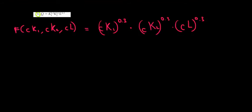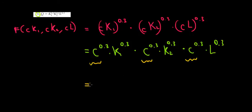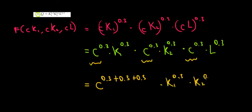Let's work out the math. This is going to be pretty mechanical. We have C to the power of 0.3 times K1 to the power of 0.3, then C to the power of 0.3 times K2 to the power of 0.3, multiplied with C to the power of 0.3 and L to the power of 0.3. Grouping the C terms — same base with different powers — that's 0.3 plus 0.3 plus 0.3, leaving us with K1 to the power of 0.3 times K2 to the power of 0.3 times L to the power of 0.3.